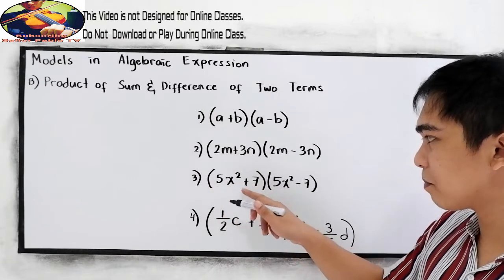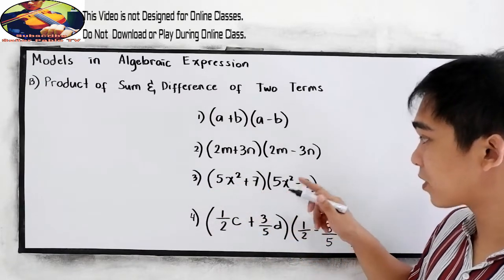And number three, 5X squared plus 7 times 5X squared minus 7.